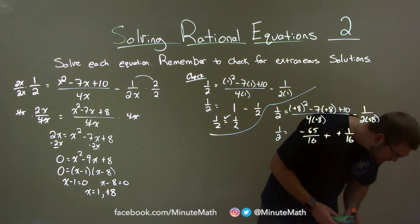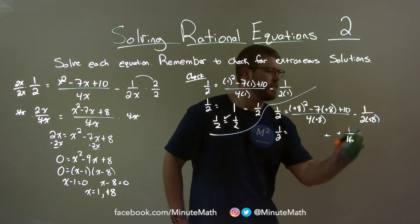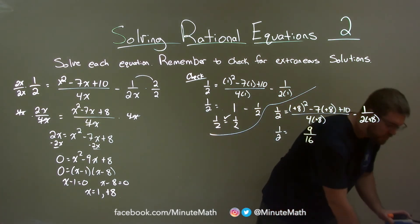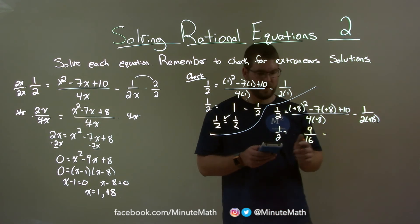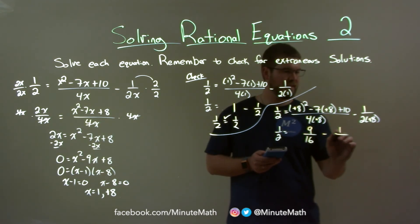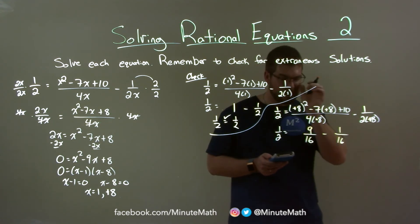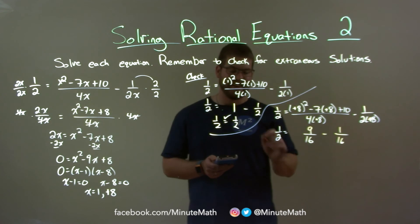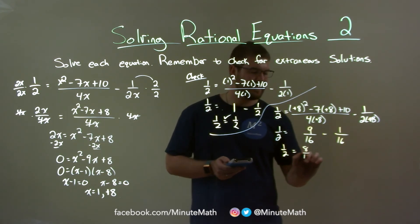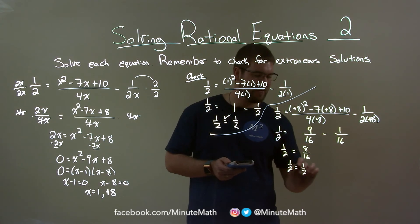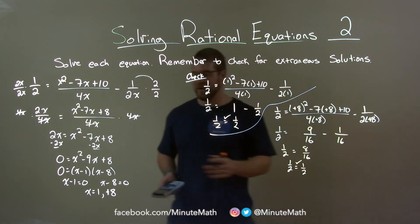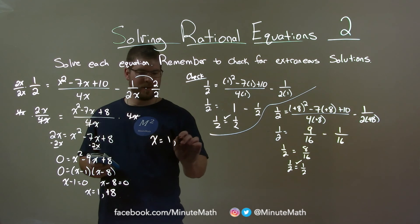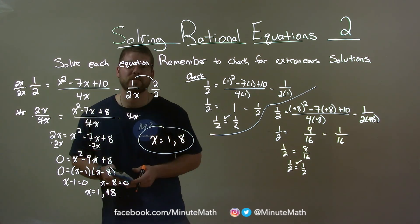With the correction, the first fraction is 9 sixteenths, and 1 over 2 times 8 is 1 sixteenth. So we have 9 sixteenths minus 1 sixteenth, which is 8 sixteenths, which equals 1 half. So 1 half equals 1 half — left and right-hand sides are equal. Both x equals 1 and x equals 8 are true solutions, with no extraneous solutions.